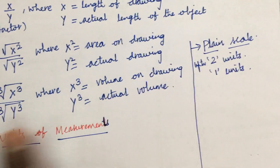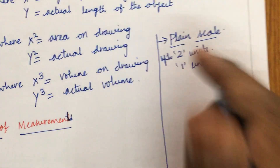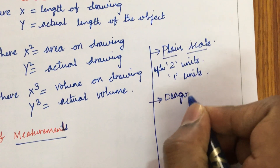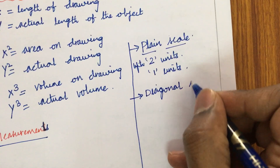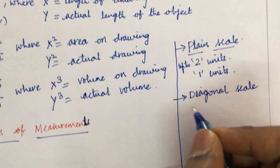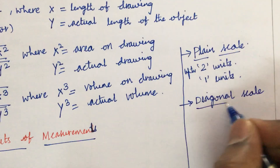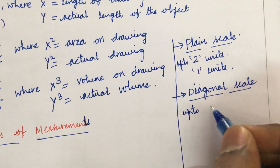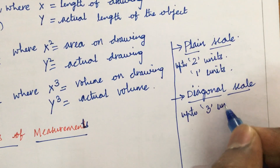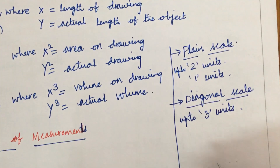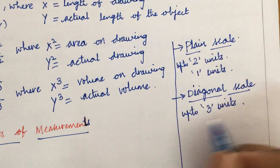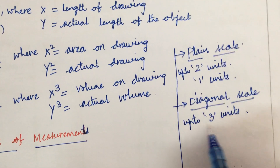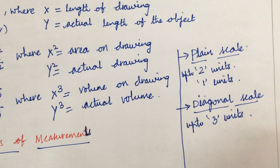A diagonal scale, on the other hand, is a scale that can read up to a maximum of 3 units. Again, those 3 units may be the same unit repeated — such as meter, meter, meter — or 3 different consecutive units.